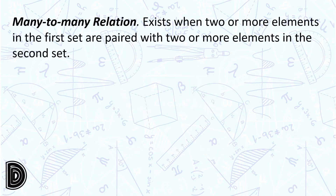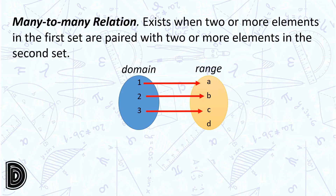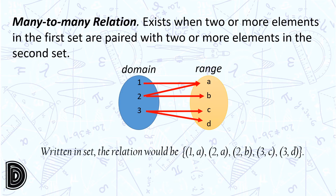Many-to-many relation exists when two or more elements in the first set are paired with two or more elements in the second set. Let's have the first set with elements 1, 2, and 3, and the second set with elements A, B, C, D. 1 is paired with A, 2 is paired with B, 3 is paired with C and also with D, and 2 is also paired with A. Written in set notation, the relation would be (1,A), (2,A), (2,B), (3,C), (3,D).